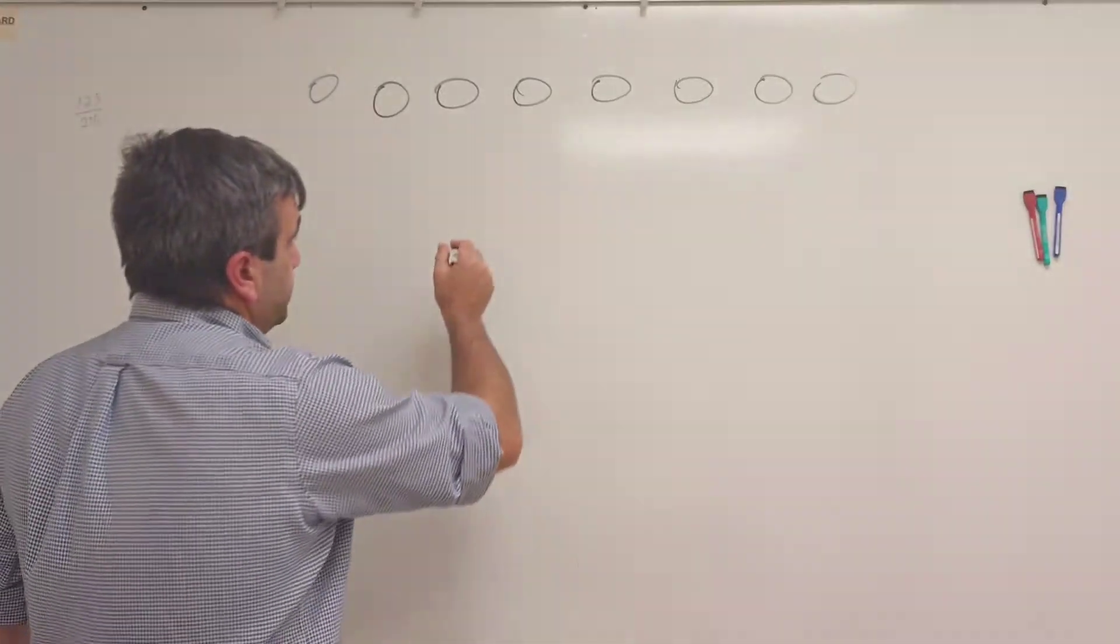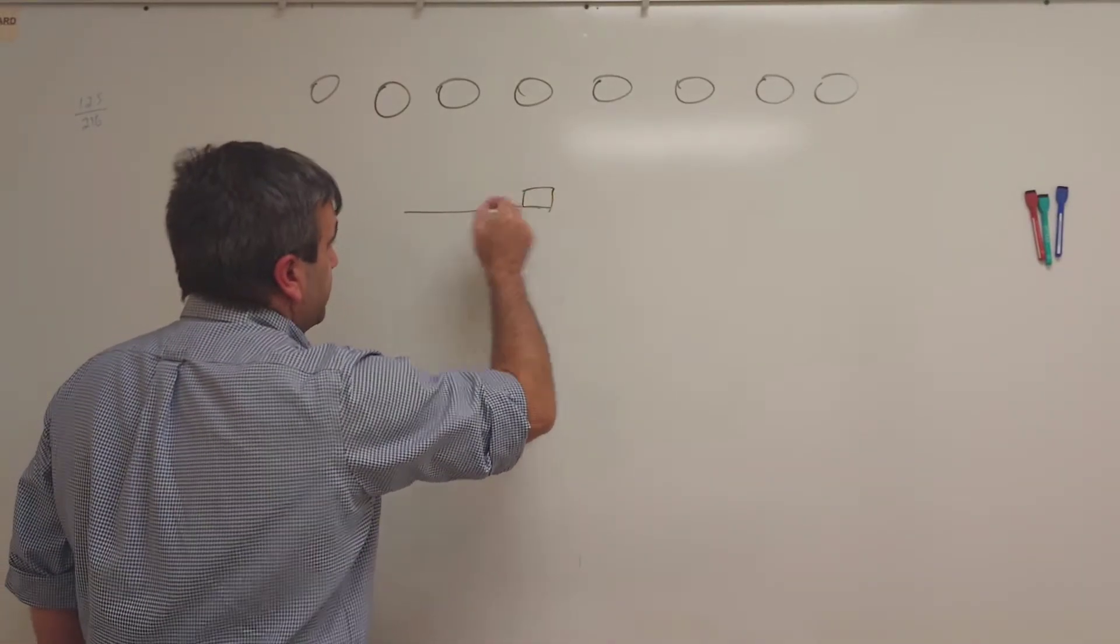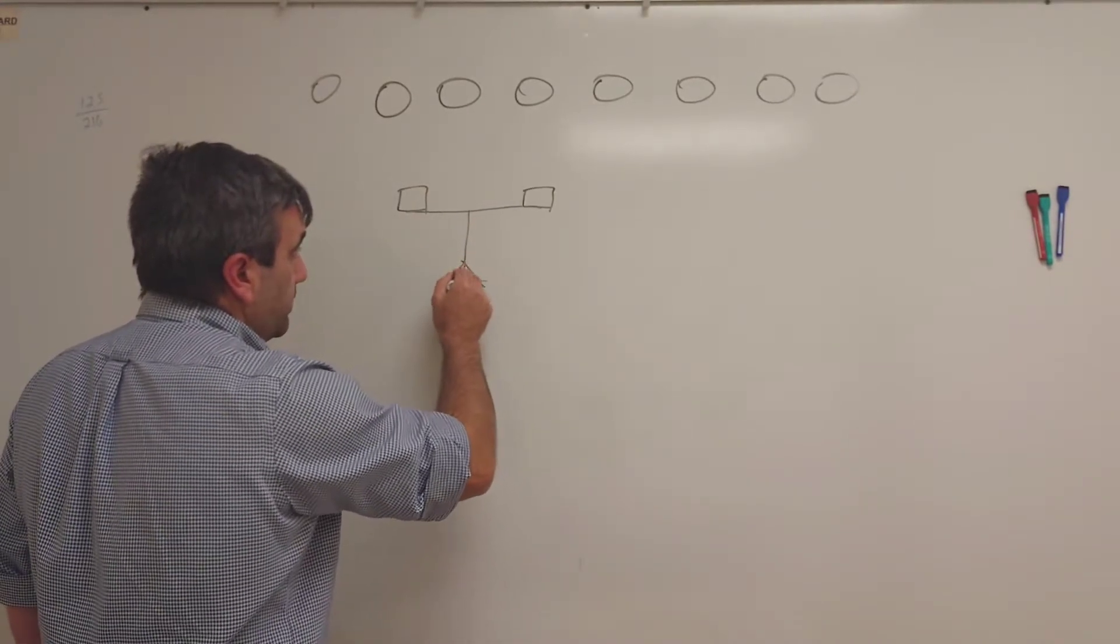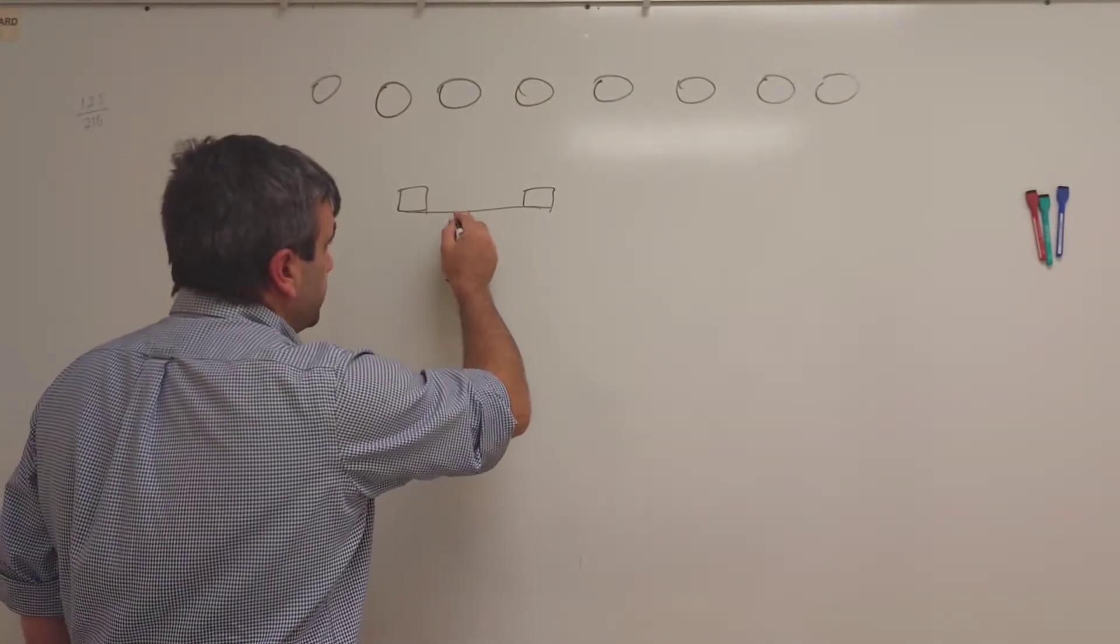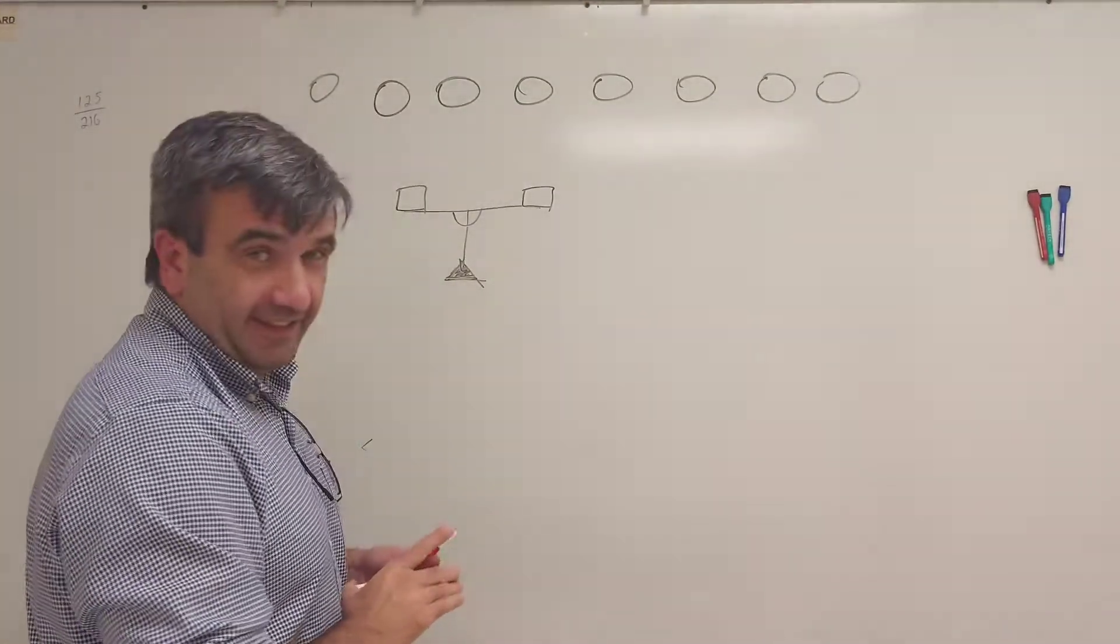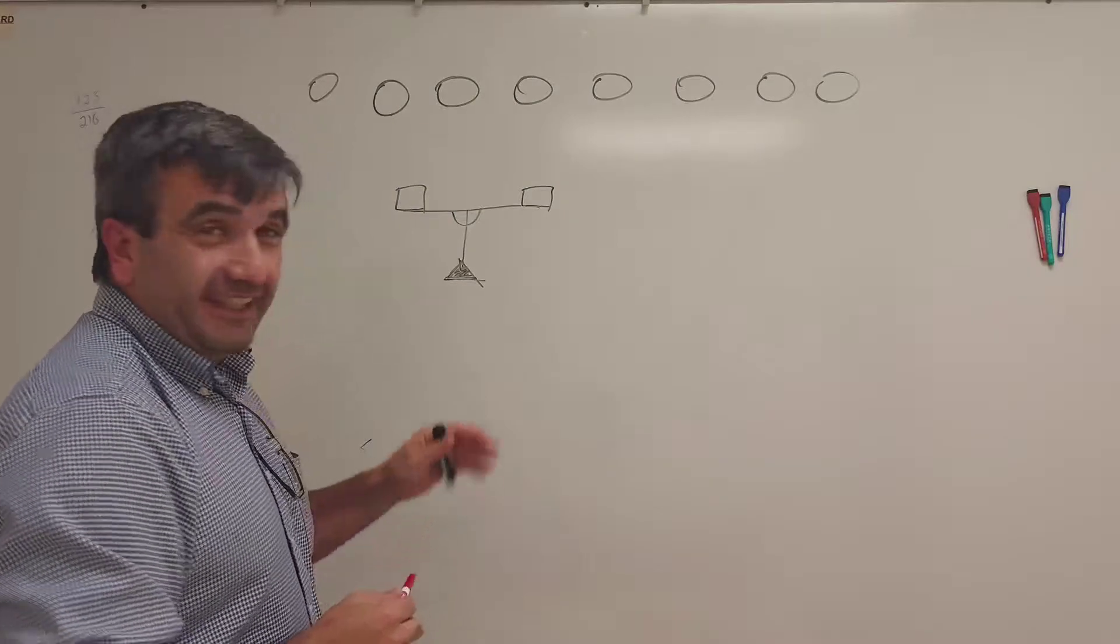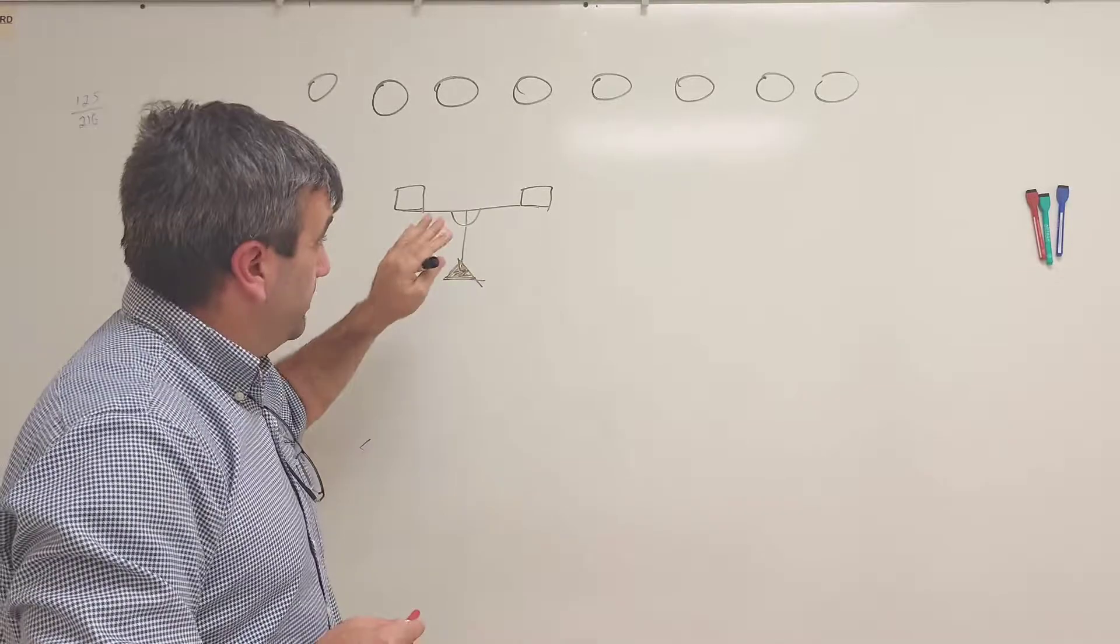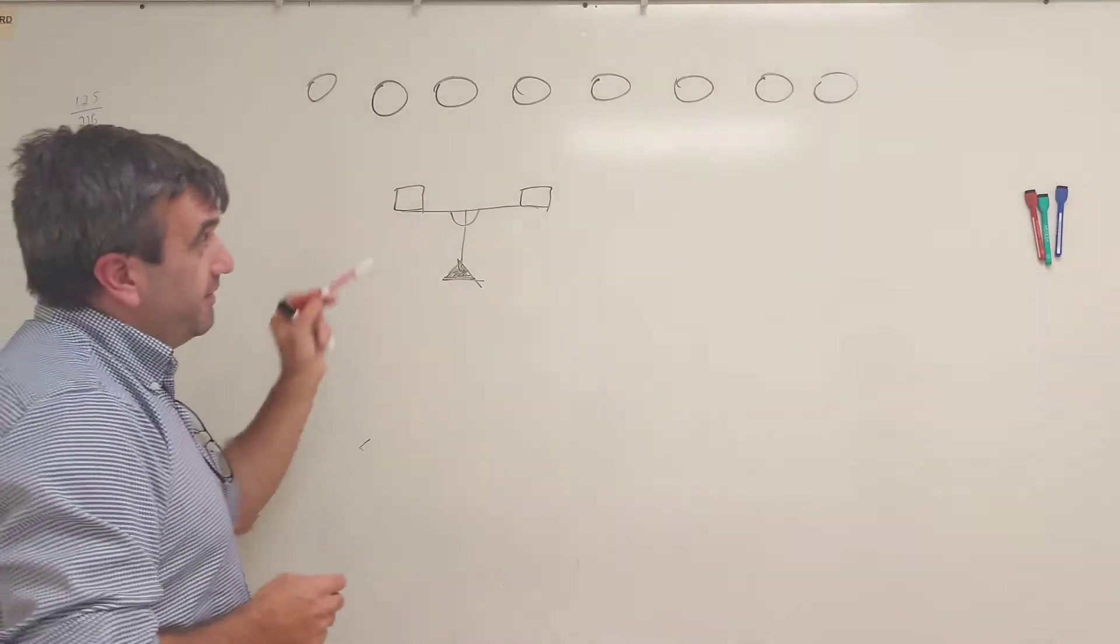We have a scale, a pharmaceutical one that they use in pharmacies. We can measure these coins twice to figure out which coin is the fake bad coin. Using the scale twice, we have to figure it out in two measurements.